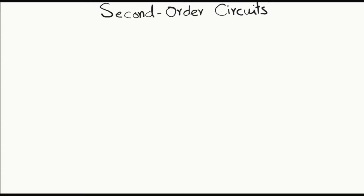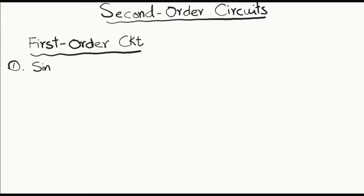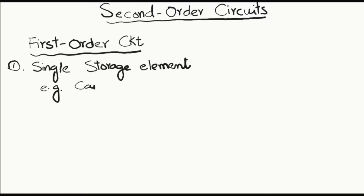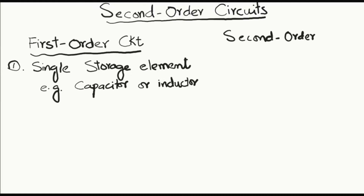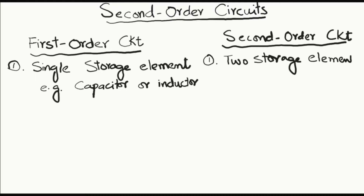Hello everyone, today we are diving into the fascinating world of second order circuits. But before that, let's quickly know the difference between first order and second order circuits. First order circuits consist of a single storage element such as a capacitor or an inductor. Second order circuits consist of two storage elements, and these two storage elements cannot be represented by an equivalent single element.